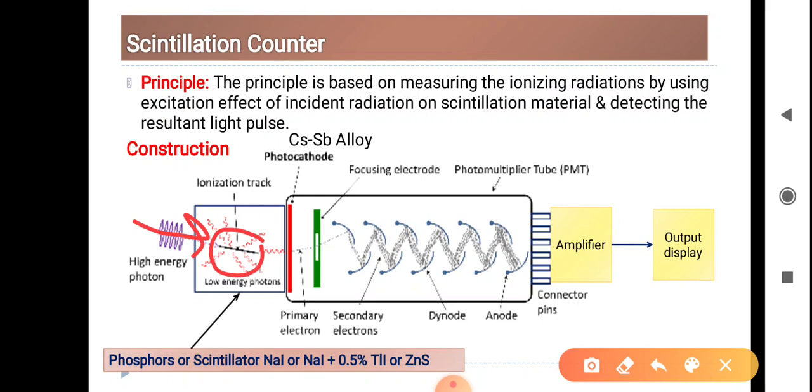The substance will be excited and de-excited, and it will produce light radiation. The light radiation will fall to the photocathode made up of cesium-antimony alloy, and this will produce electrons.